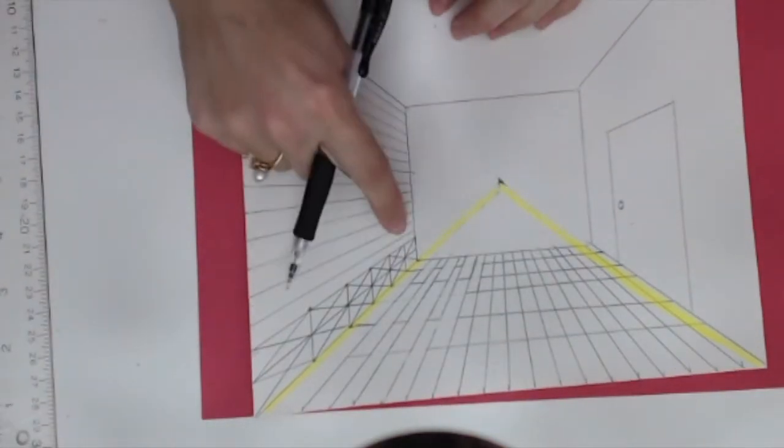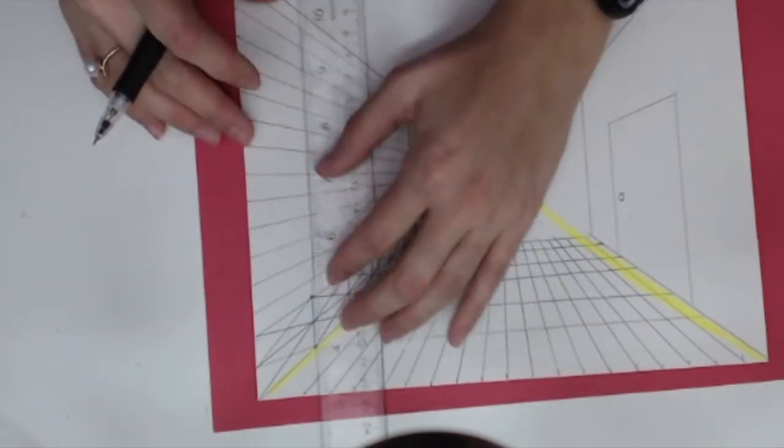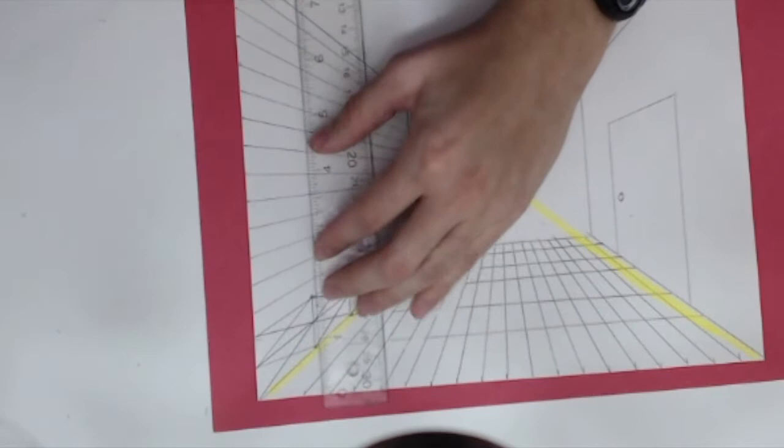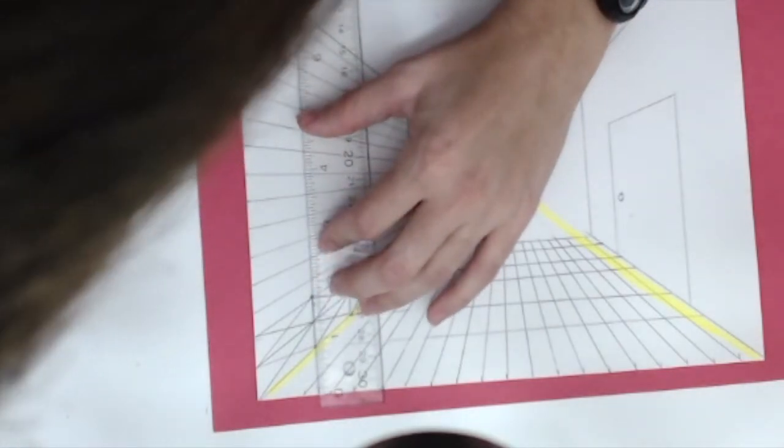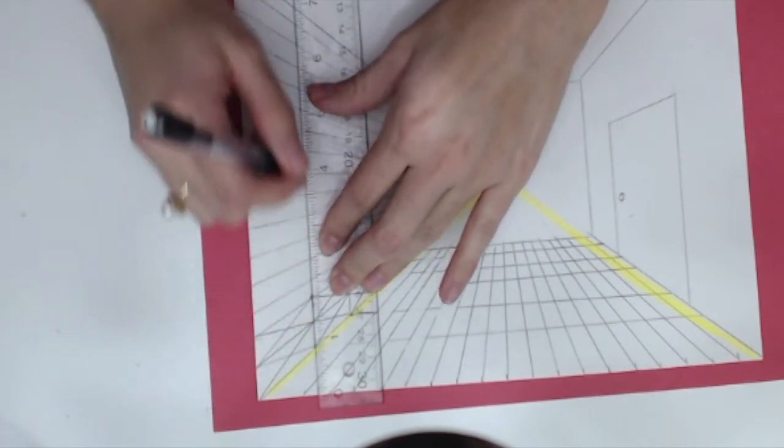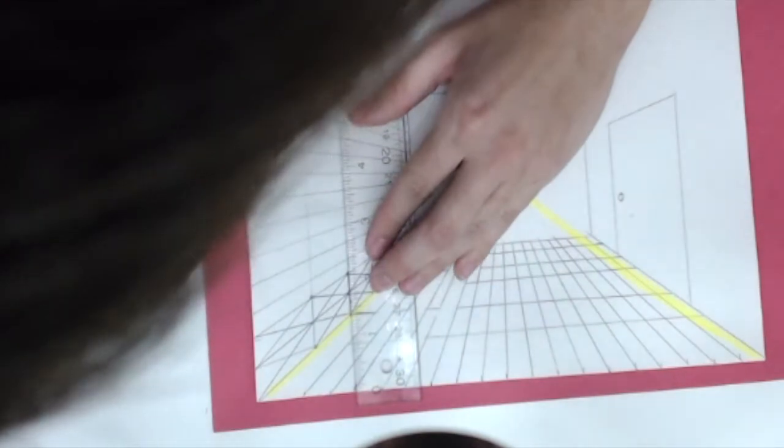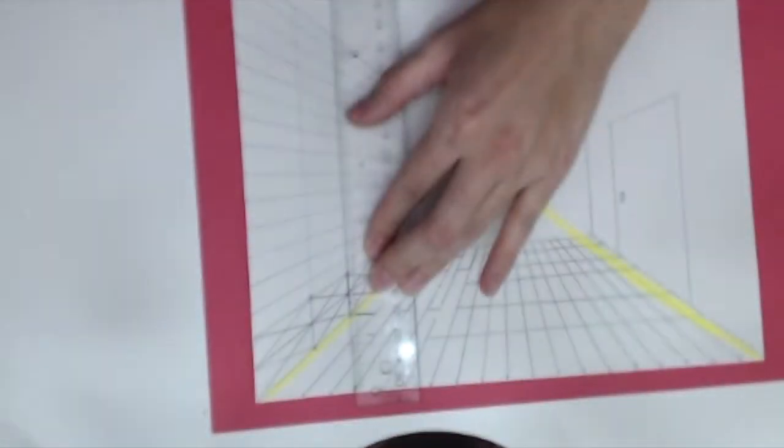Now notice that we have these vertical lines left over from when we did our subdivision. Go ahead and take your ruler, and from those vertical lines try to get your ruler nice and straight. Continue them up along the wall, kind of like you're just making a tile floor. But we'll change things up just a little bit in a moment.